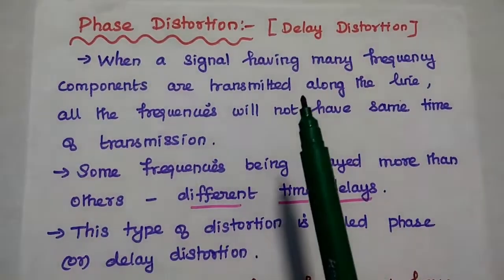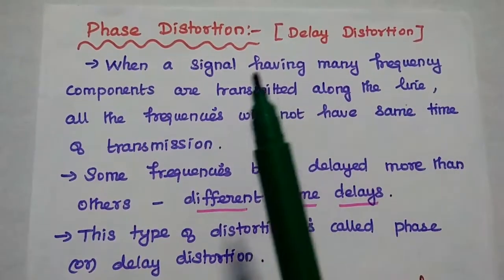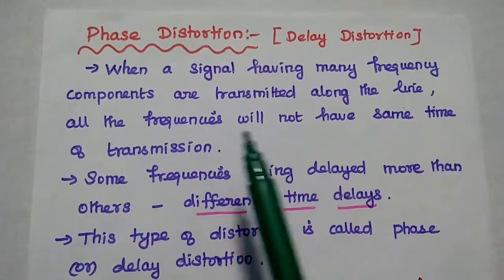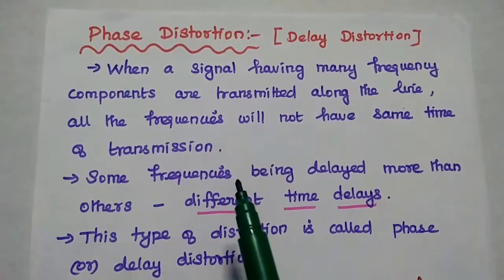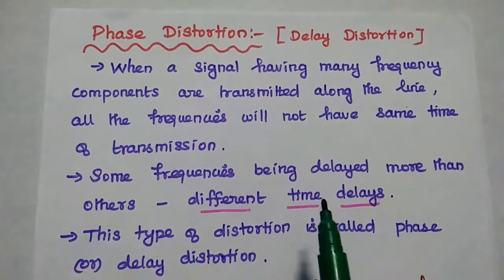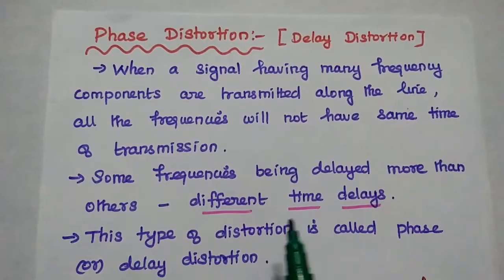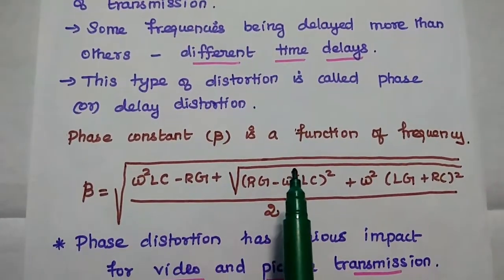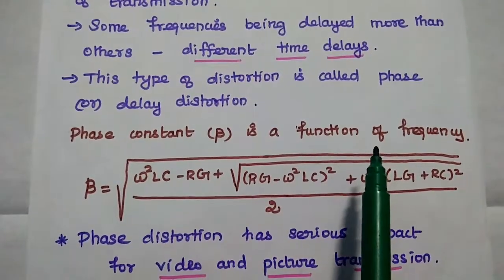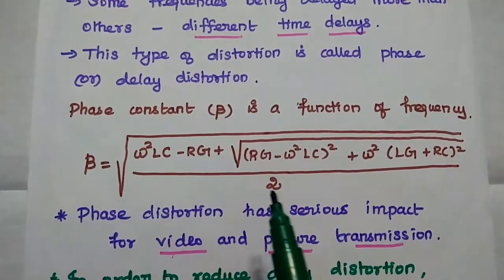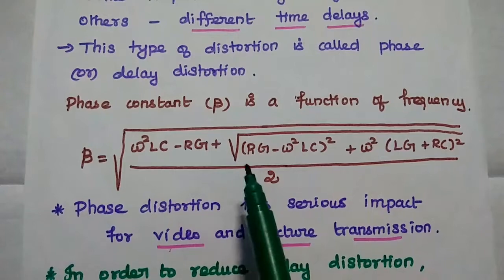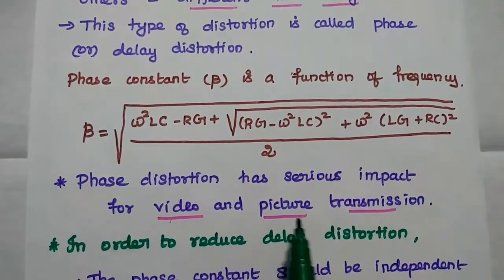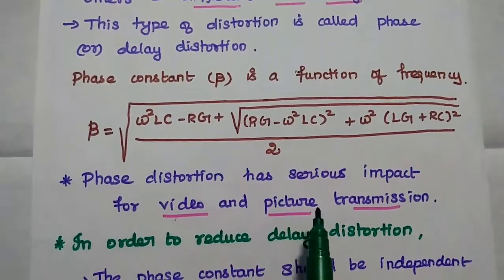The next type is phase distortion, also called delay distortion. When a signal having many frequency components is transmitted along the transmission line, all the frequencies will not have the same time of transmission — some frequencies are delayed more than others. Each frequency has a different time delay. This type of distortion is called phase distortion or delay distortion. Here, the phase constant beta is a function of frequency, as given by the phase constant equation for a transmission line. This phase distortion has a serious impact on video and picture transmission, but is not as serious for audio transmission.